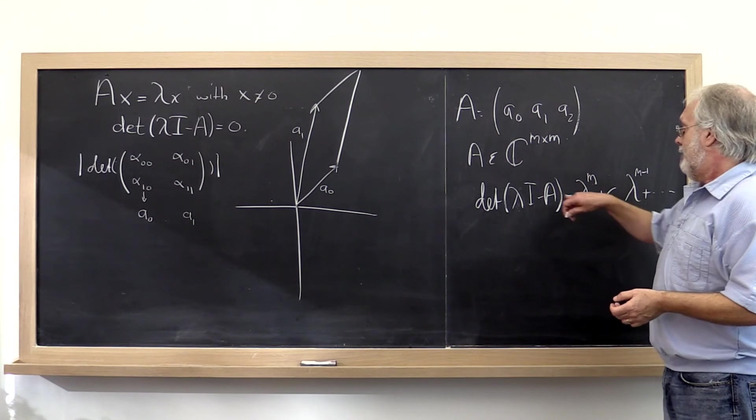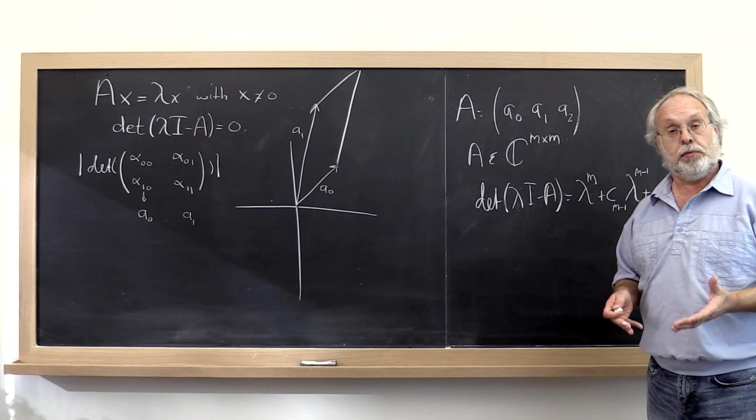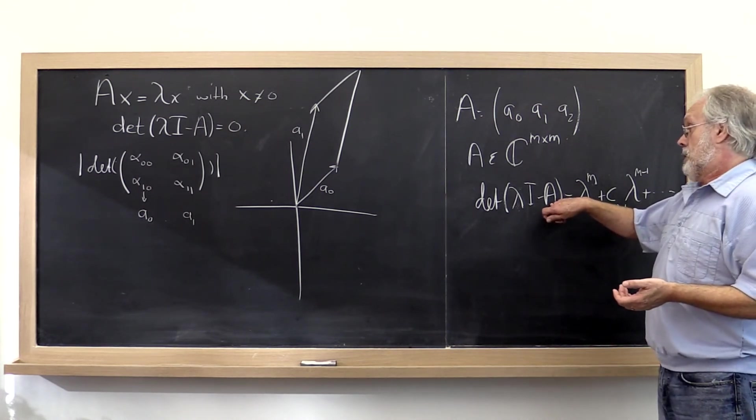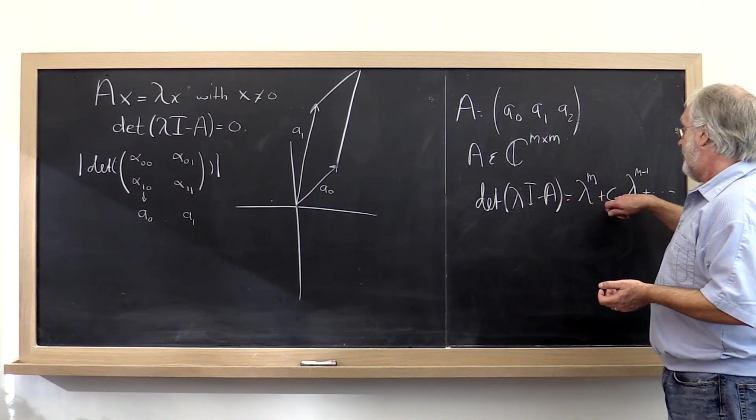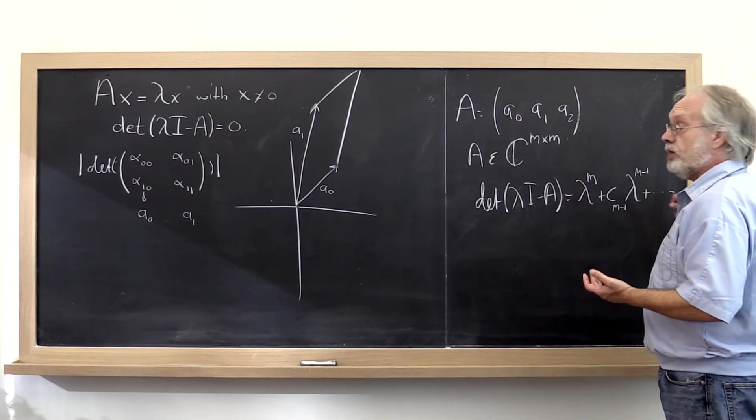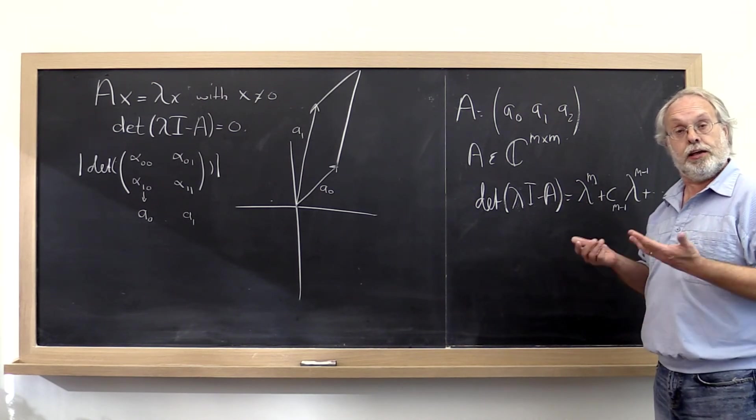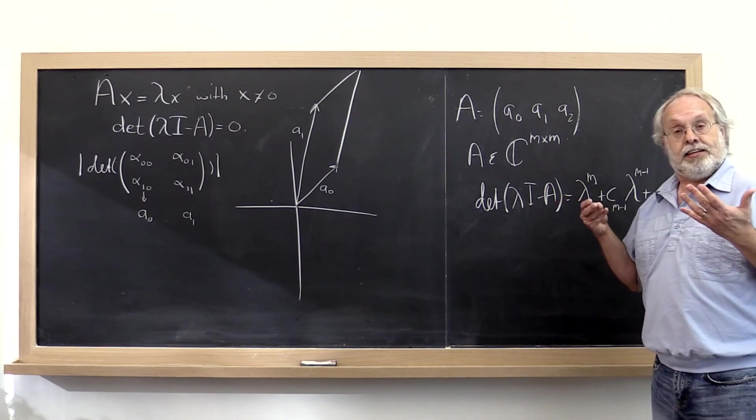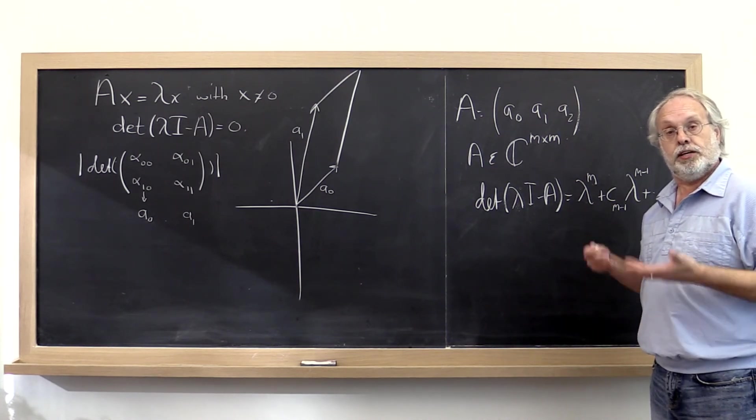And this is something we probably should prove, but we're just going to take my word for it because the details aren't particularly important. If A has real valued entries, then its polynomial has real valued coefficients. And we know that if a polynomial has real valued coefficients, then its roots have to come in conjugate pairs. Therefore, if A is real valued, then its eigenvalues inherently have to come in conjugate pairs.